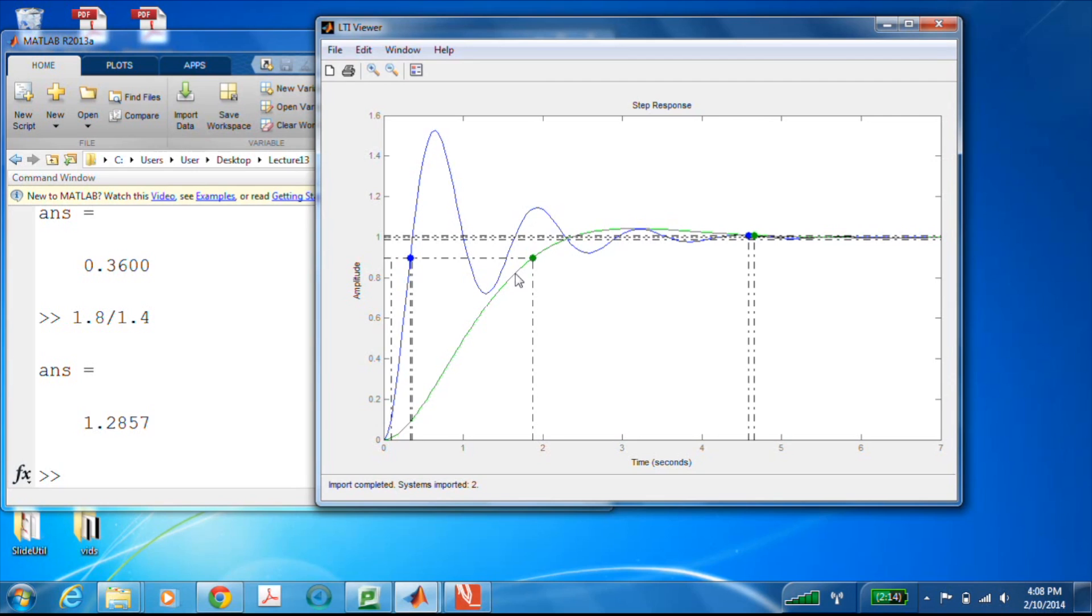Here we have zeta 0.2, here we have zeta 0.7. If we had made a transfer function with zeta 0.6, that approximation of 1.8 over omega n would have worked pretty well.